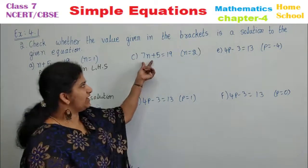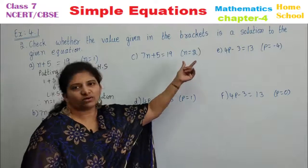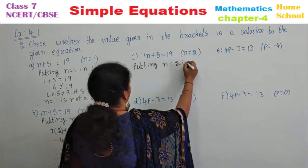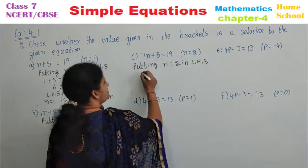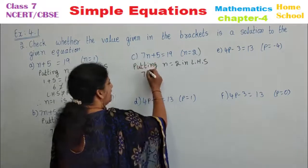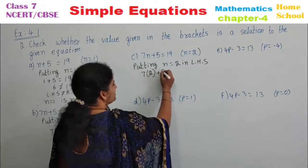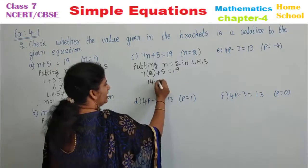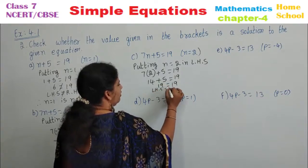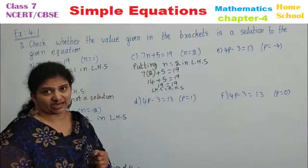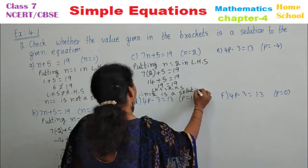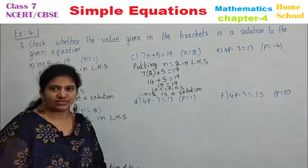Sub-question C: 7n plus 5 equals 19, with n equal to 2. Putting n equal to 2 in LHS: 7 times (2) plus 5 — put brackets to avoid confusion. 7 times 2 is 14, plus 5 equals 19, and 19 equals 19. LHS equals RHS. Therefore, n equals 2 is a solution for the given equation.